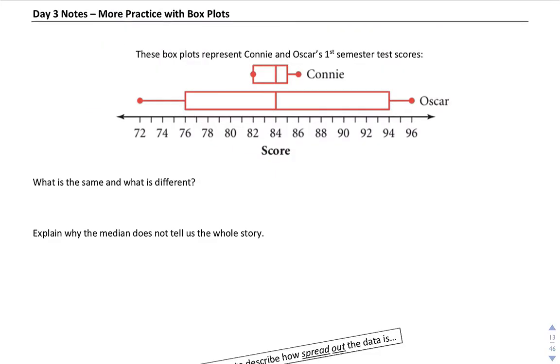So far this unit we've been looking at five number summaries, box plots, and outliers. So that's what we're going to review in this podcast.